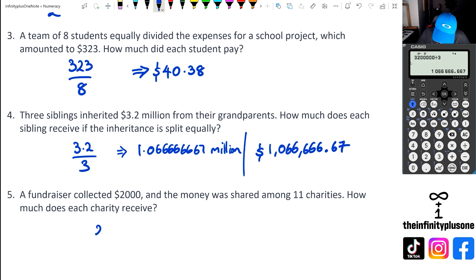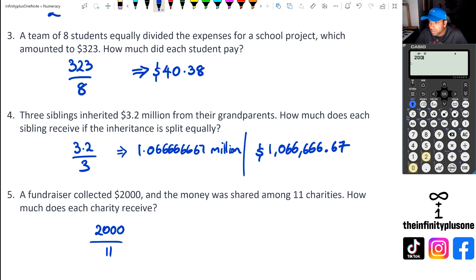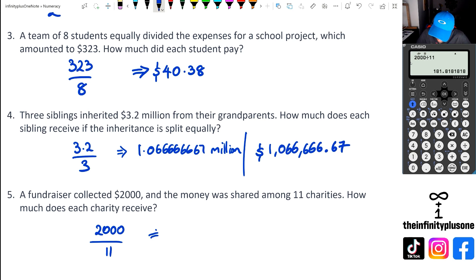Let's look at question five. We've got $2,000 and we're splitting it with 11 charities. So we go 2,000 divided by 11. Because it's money, we only go up to two decimal places, so each charity will receive approximately $181.82.